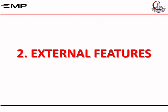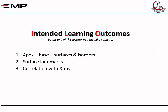The second part of the lecture is to study the external features of the heart. We will cover the various directions of the heart, its apex, its base, its four surfaces, and its four borders. We will study the surface landmarks, how these borders are drawn on the surface, and correlate that with chest x-ray.